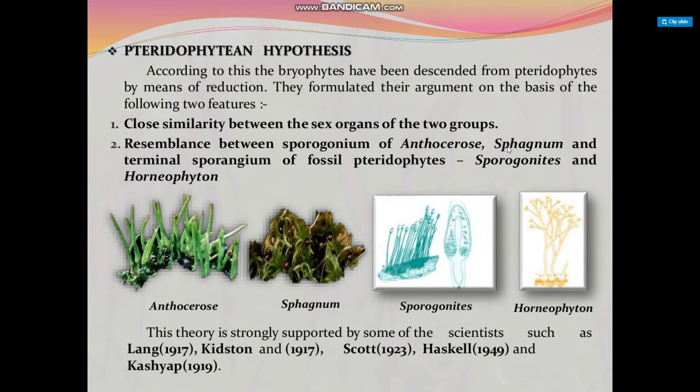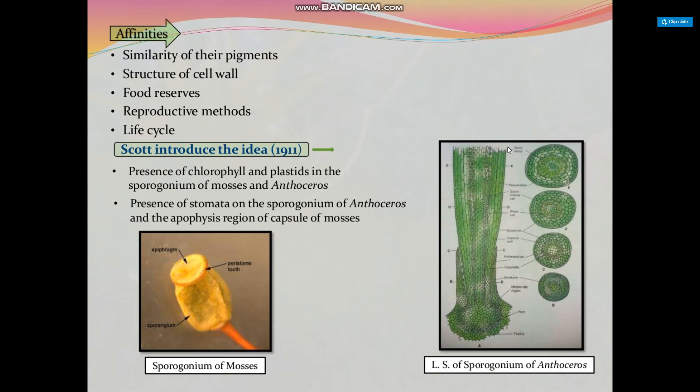The pteridophytian hypothesis is strongly supported by scientists such as Laing, Kinston, Scott, Haekel, and Kashyap. Regarding affinities, bryophytes show similarities in their photosynthetic pigments, cell wall structure, food reserves, reproductive methods, and life cycle. Notable features include the presence of chlorophyll in plastids in the sporogonium of mosses and Anthoceros, and the presence of stomata on the sporogonium of Anthoceros and in the apophysis region of the capsule of mosses.